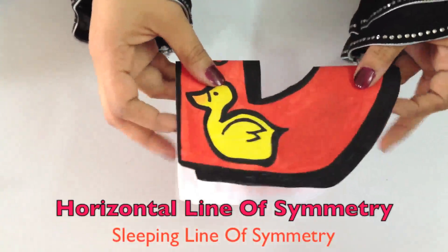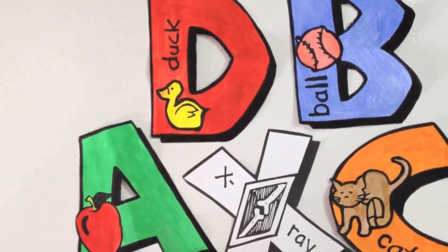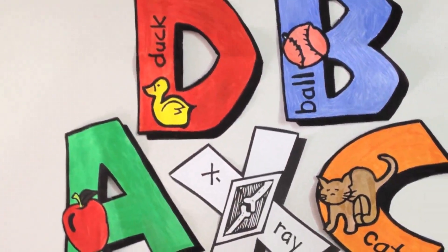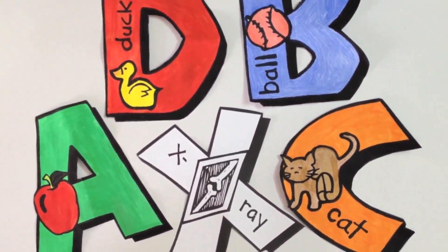D has a horizontal line of symmetry. You can think of other shapes and letters and find their lines of symmetry. Some may have 0, 1, 2, or even 4 lines of symmetry. Have fun!